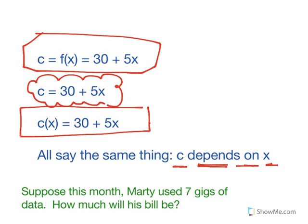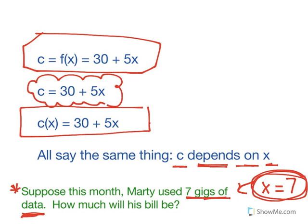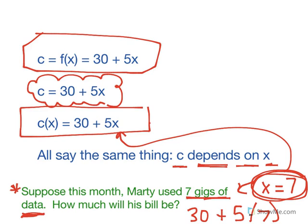So our next question is suppose this month Marty used seven gigs of data. How much will his bill be? All we're going to do then is take that seven. Seven is gigs of data. Remember that we said gigs of data was x. So what this is telling me is x equals seven. Just like we were doing in the previous unit, when we know a number, we're going to take that number and substitute it in, which means we're paying that initial thirty dollars plus five dollars each for each of those seven gigs. Do your multiplication first, then add and make sure you come up with an answer of sixty five dollars for Marty's total bill this month.